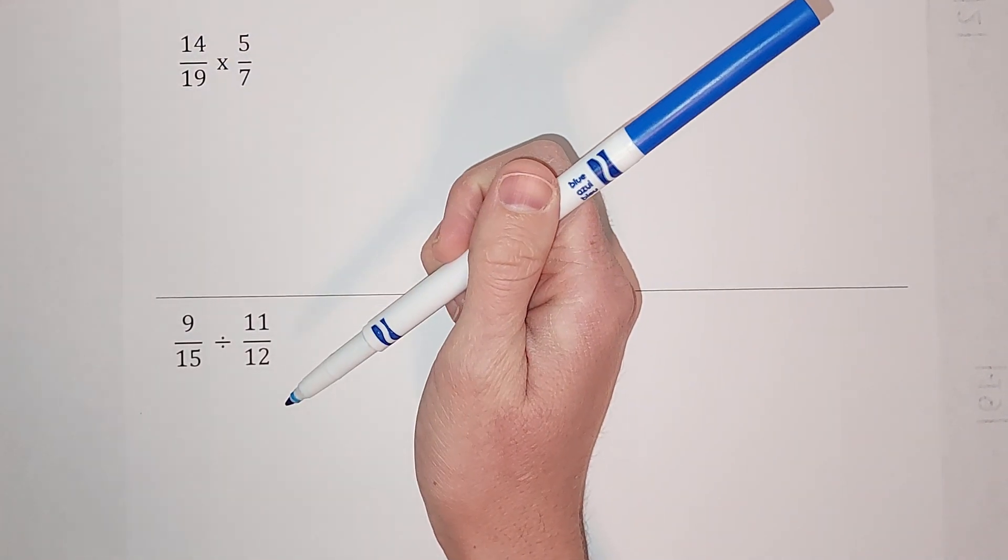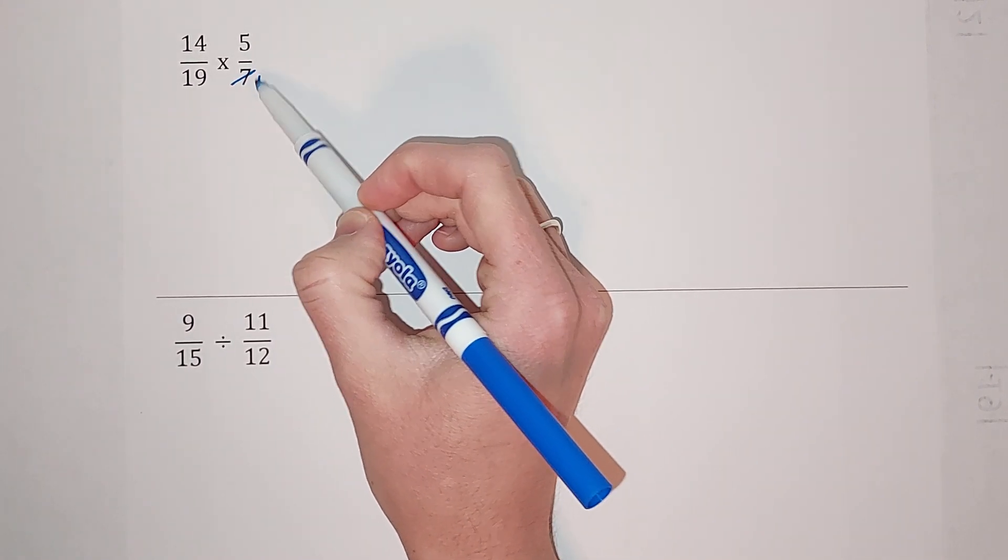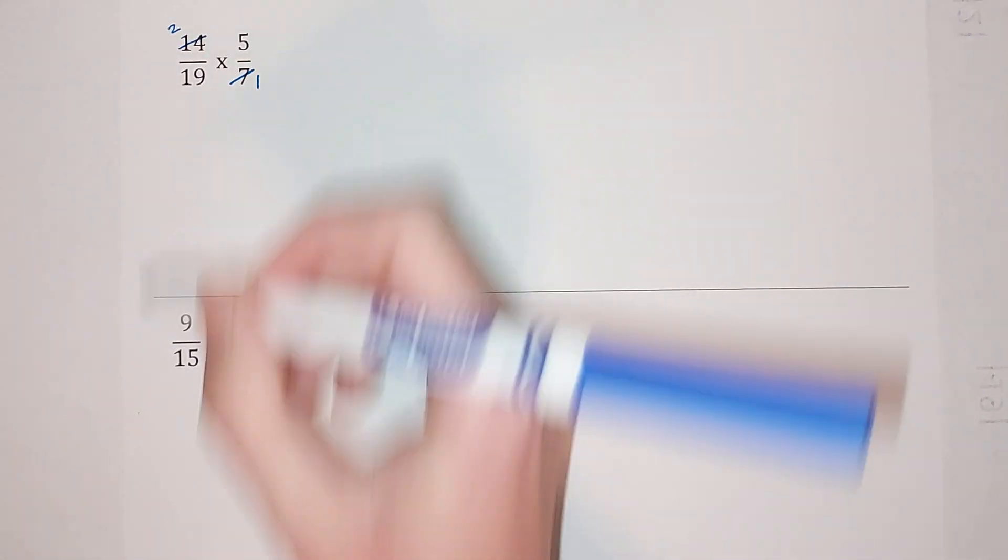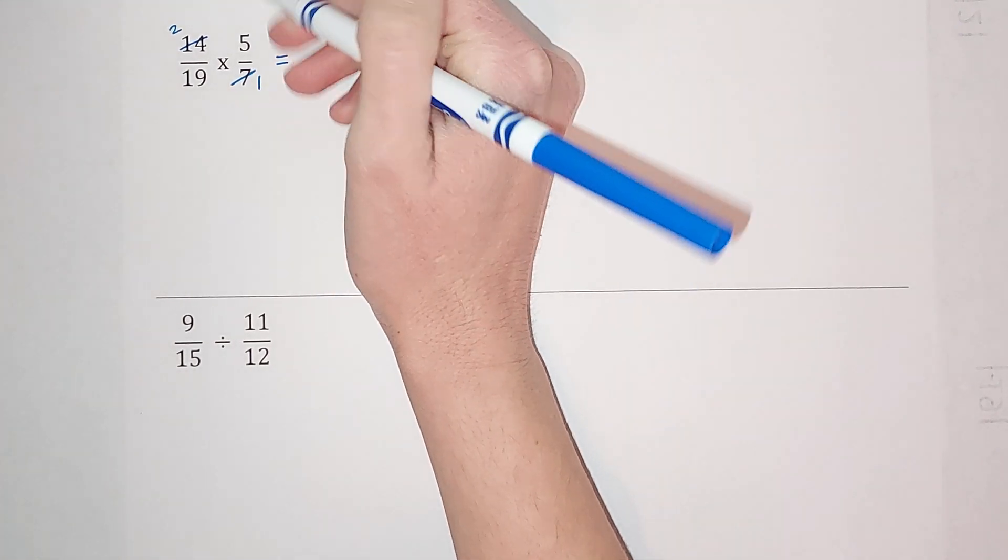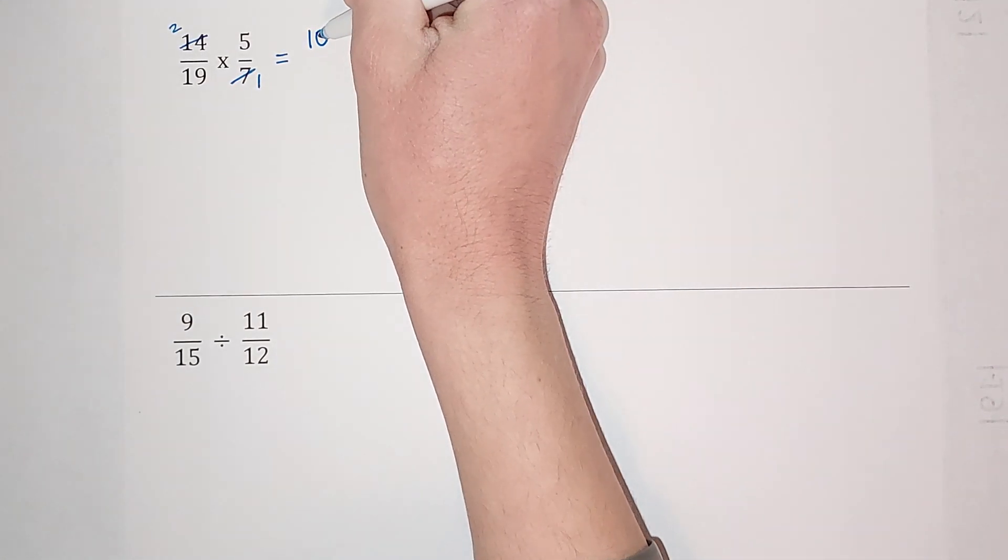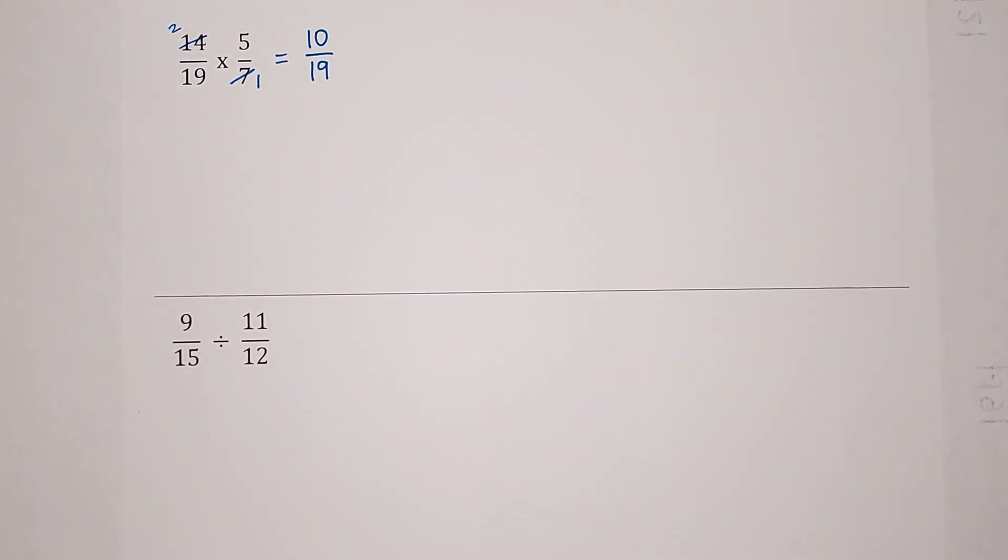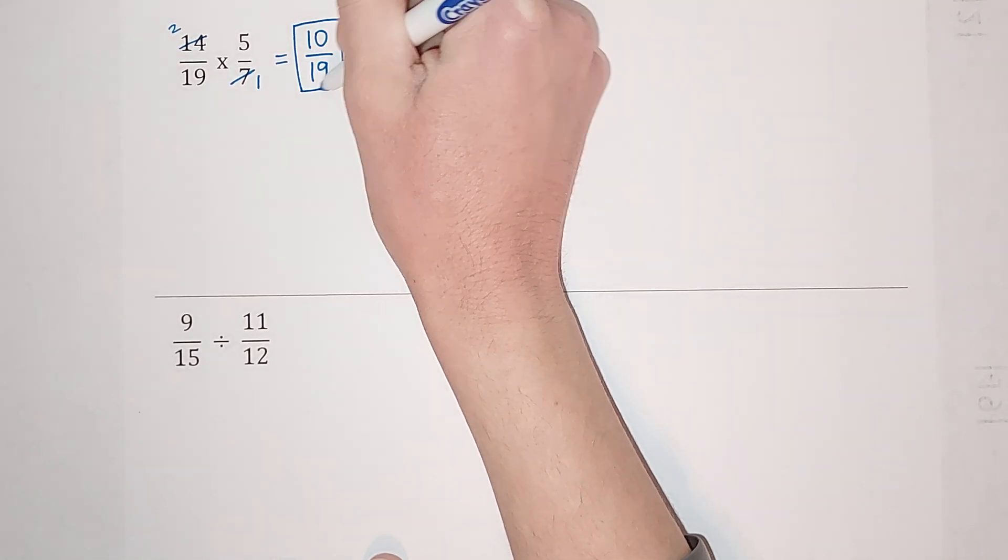As I look at this, I notice the 14 and the 7. I know that 7 goes into 7 once, 7 goes into 14 twice. I can do that beforehand. Now I multiply straight across, so it's gonna be 2 times 5 gives me 10, 19 times 1 gives me 19. Double check to make sure it doesn't simplify further, but this one doesn't, so that's my answer. Way better than adding and subtracting, right?